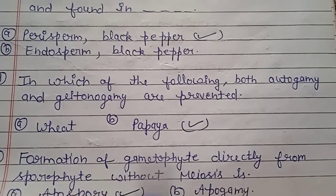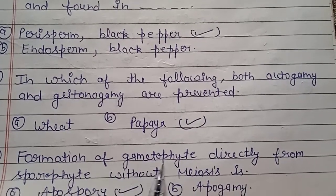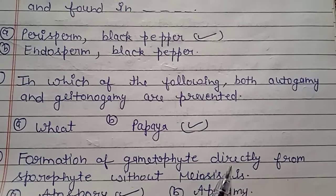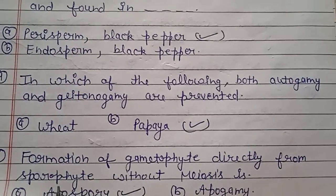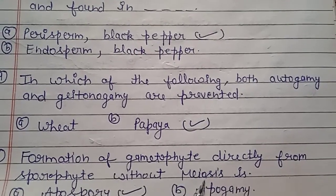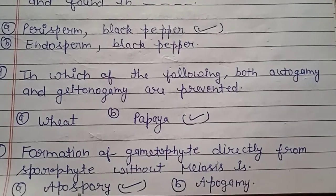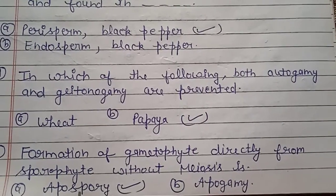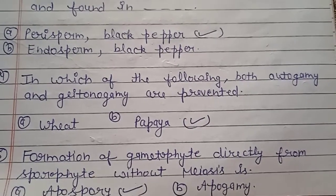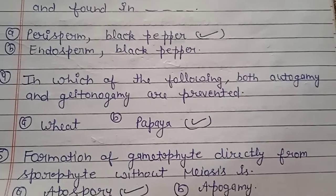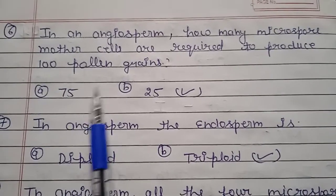Question number 5: formation of gametophyte directly from sporophyte without meiosis is called what? The right answer is apospory.